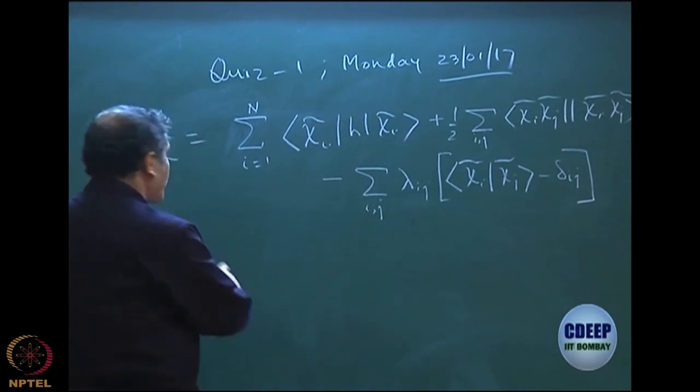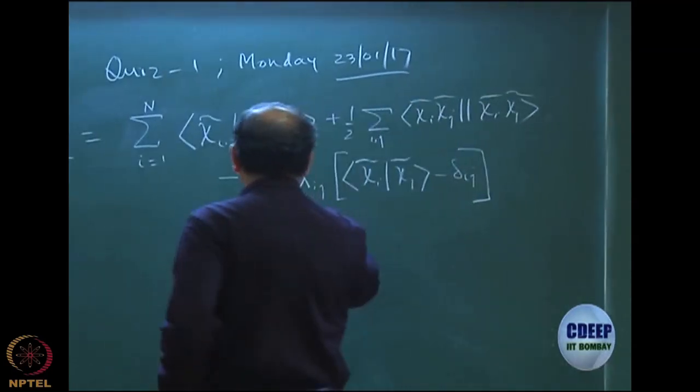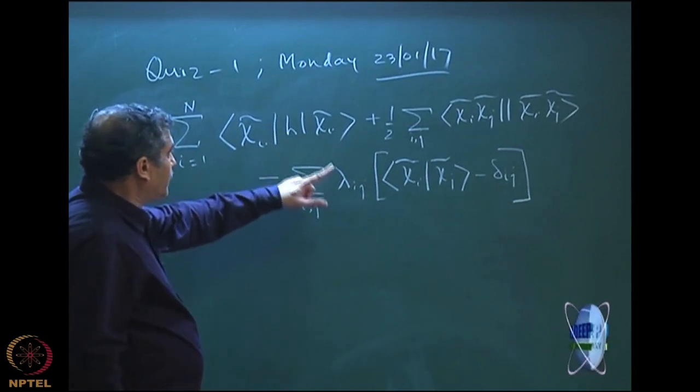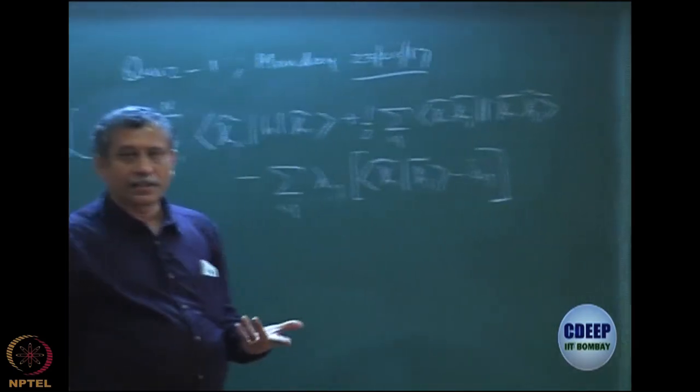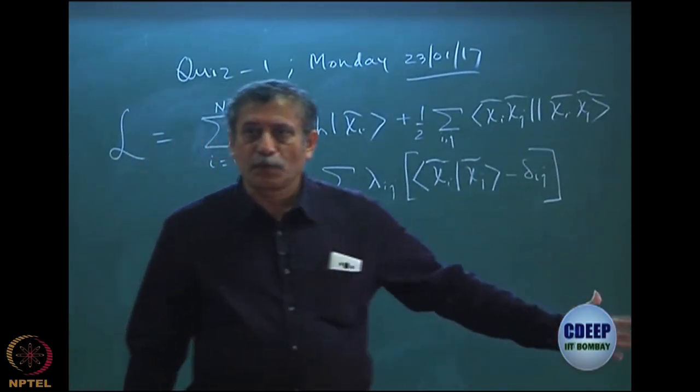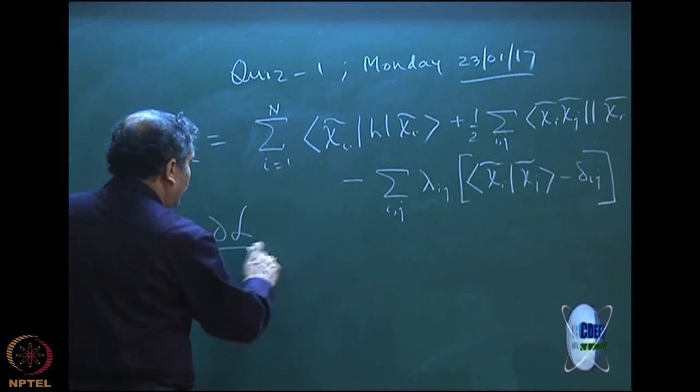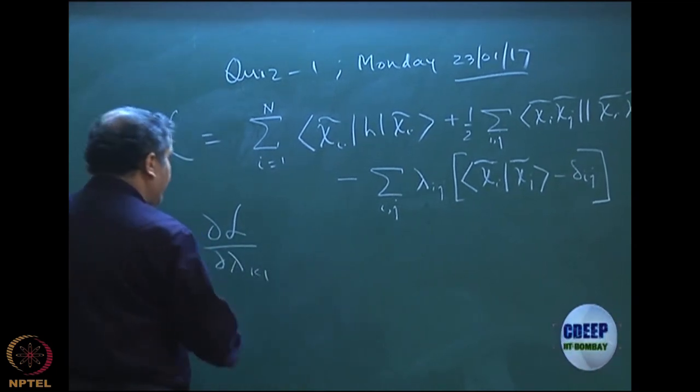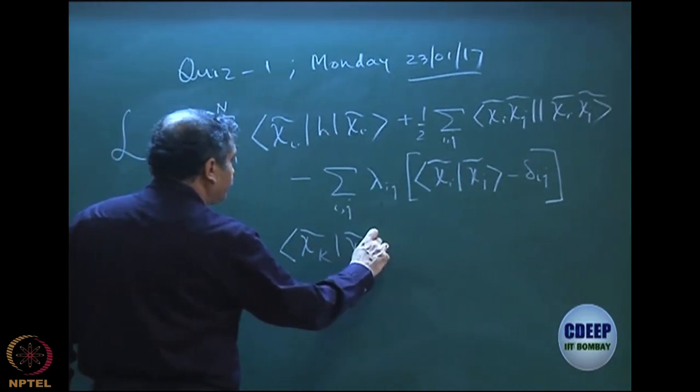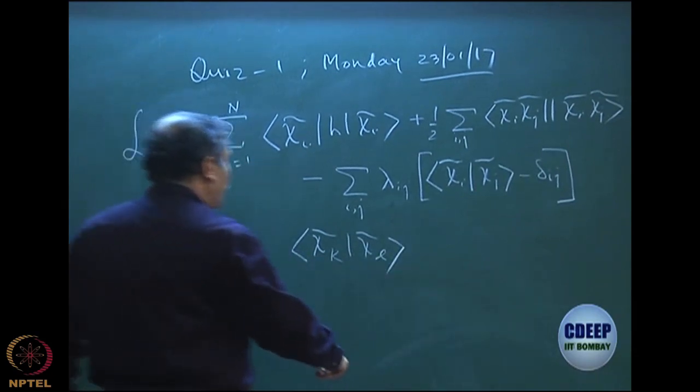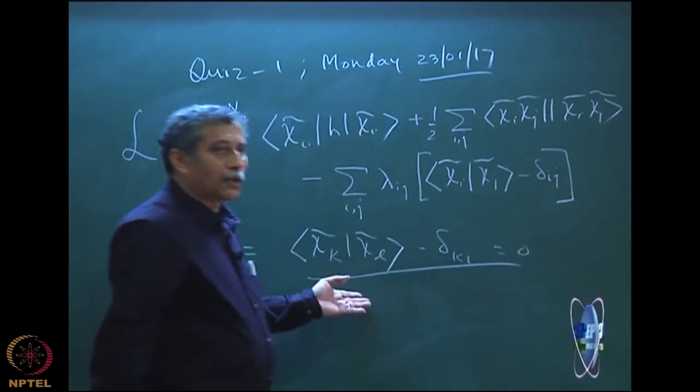I have to now differentiate or make this optimum or stationary with respect to chi i tilde as well as lambda ij. But of course, the derivative with respect to lambda ij is trivial because we all know that we will get back this equation and that is the reason the Lagrange multiplier is put like this. When I differentiate, automatically if I differentiate del L del lambda any one k l, the result will simply be chi k tilde chi l tilde minus delta k l equal to 0. That automatically gives me the orthonormality equation.